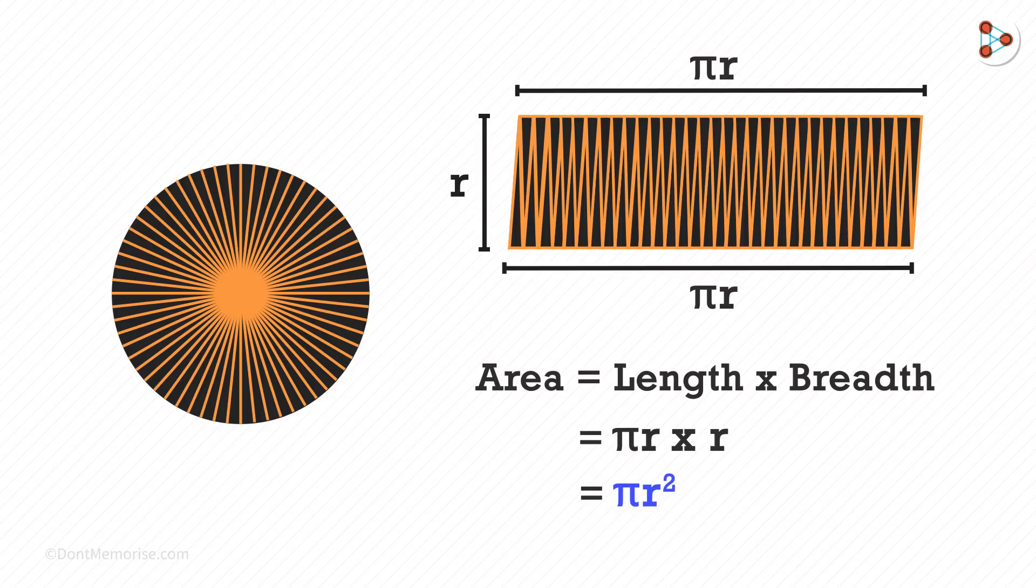So now we know why the area of a circle is pi r squared. In the next video, we shall see one more concept which will prove this. For more such interesting math concepts, please subscribe to our YouTube channel.